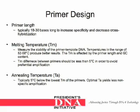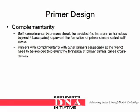Primer length is typically 18 to 30 bases long to increase specificity and decrease cross-hybridization. The melting temperature is a measure of the stability of the primer template DNA. Temperatures in the range of 52 to 58 degrees Celsius produce better results. The melting temperature is affected by the primer length and GC content. The melting temperature difference between primers should be less than 5 degrees Celsius to avoid preferential amplification. The annealing temperature is typically 5 degrees Celsius below the lowest melting temperature of the primers. Optimal annealing temperature yields less non-specific amplification. Self-complementarity primers should be avoided so that there are no intra-primer homology beyond 4 base pairs. This is to prevent the formation of primer dimers called self-dimers.